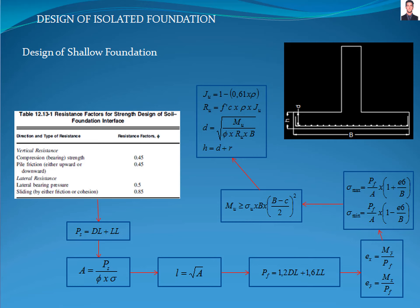The third step is to calculate the height of the foundation with its equation, where d is the distance from the utmost fiber of the footing to the centroid of the reinforcement, phi is the reduction factor, and b is the size of the foundation analyzed. The total height of the foundation is the sum of d plus r, where r is the concrete cover specified in table 20.5.1.3.1 of the ACI 318 standard.